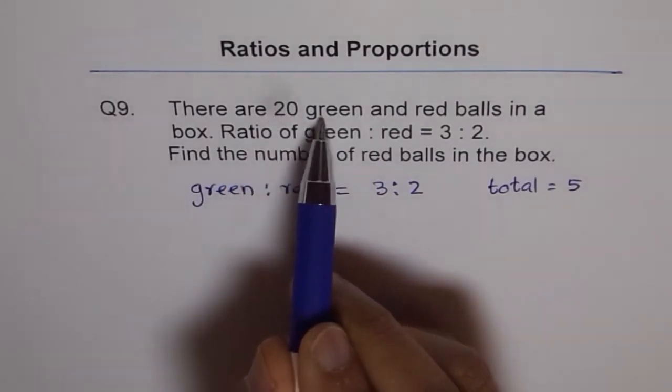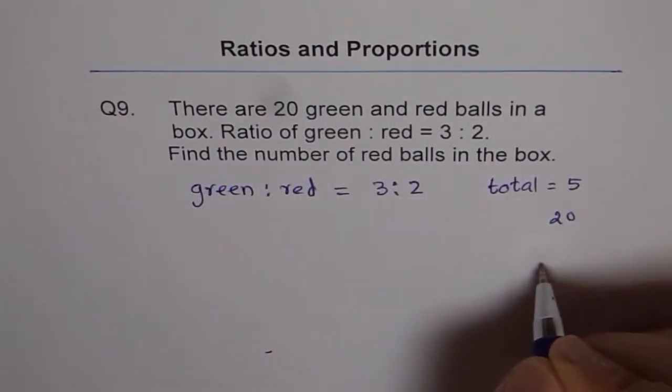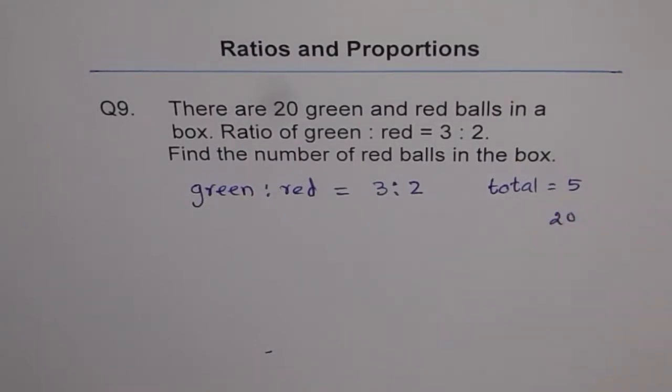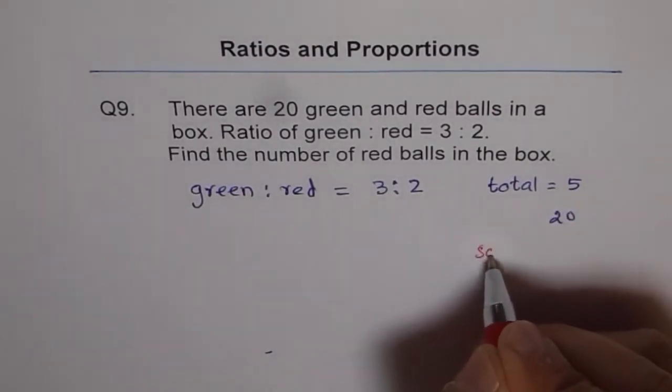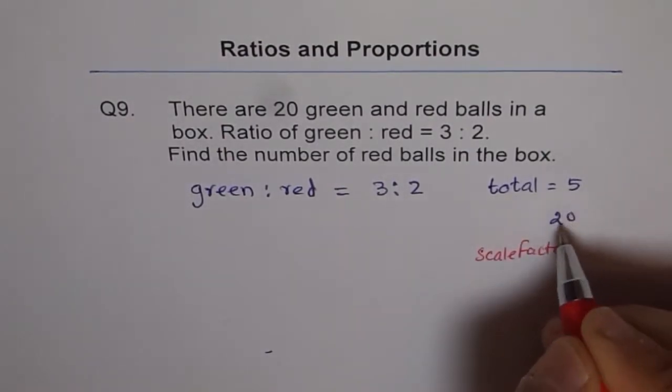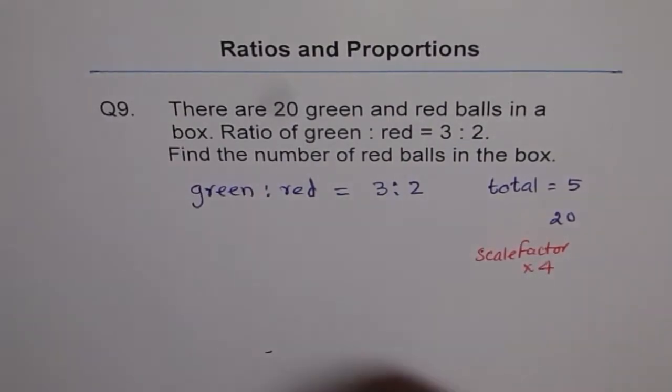Now it says there are 20 green and red balls, not 5, 20. So we have 20 not 5. So what is the scale factor? The scale factor is, we write scale factor. So scale factor is how do you get 20 from 5? It is times 4. You see that, that is the scale factor.